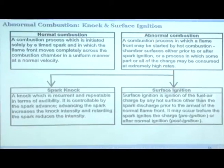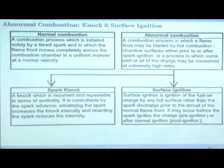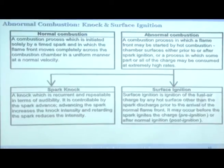Abnormal combustion is a process in which a flame front may be started by a hot combustion chamber surface either prior to or after the spark ignition, or a process in which some part of the charge is consumed at extremely high rates — the last part of the charge detonates. That is called abnormal combustion.